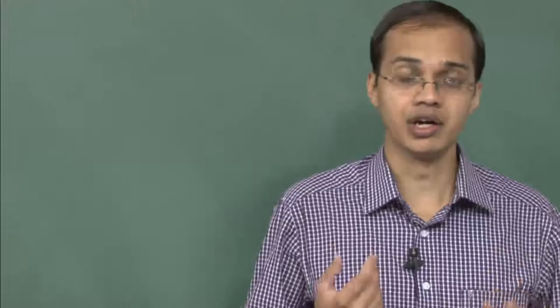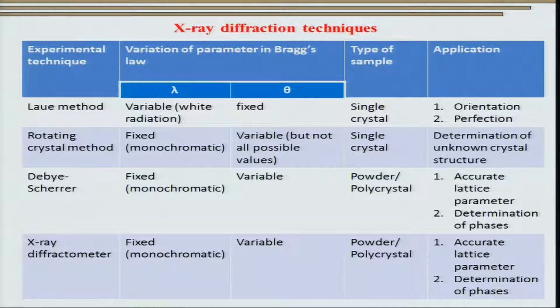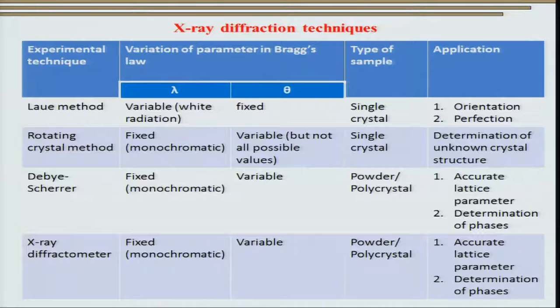An even more challenging case is when we have no idea about the existing crystal structure of the material. In that case, not only is the reciprocal space orientation unknown, but the reciprocal space vectors themselves are unknown. In order to map this reciprocal space, we generally use what is known as the rotating crystal method, where a fixed wavelength is used and the sample angle θ is varied through most values. This is essentially used to determine unknown crystal structures, though it is quite complicated and a field in itself.